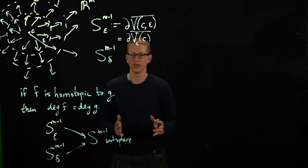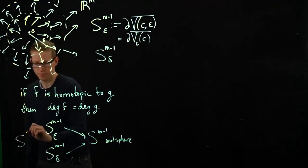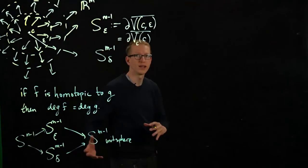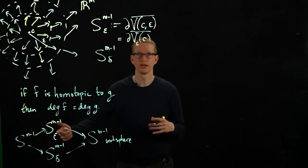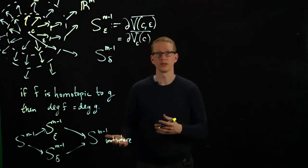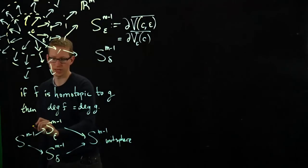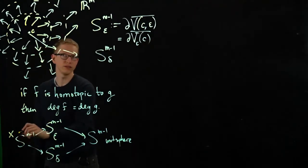And we want to compare these two different functions. And so what we do is we can just translate our sphere and then we can scale it down or up depending on whether epsilon or delta is greater than or less than one. And so what we can actually do is we can, for any point X on this unit sphere, we can map it forward just by translating.